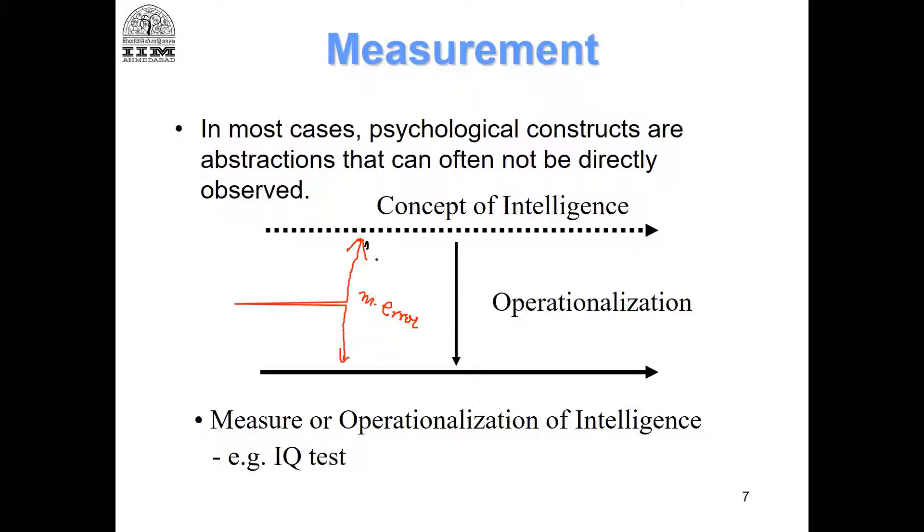Measurement error after the question and answer session. This is where we stopped just before the Q&A, where we mentioned the concept of intelligence as a theoretical interest. The solid line is our measure, and the difference between the two is the measurement error.